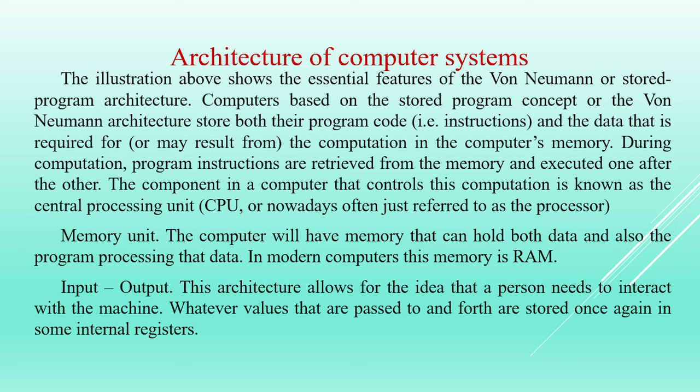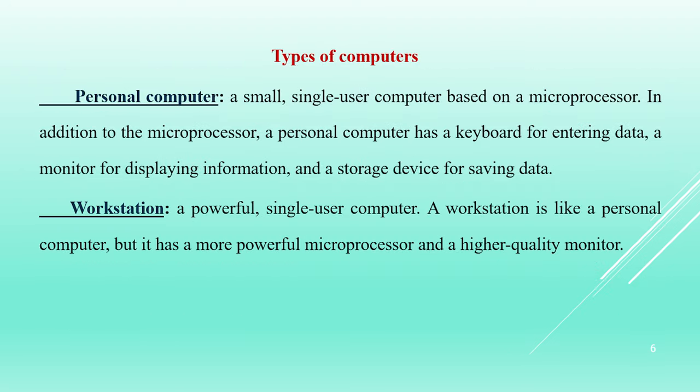Now let's look at the architecture of computer systems and its two devices. You can see it on the screen. There are two devices: input device and output device, the central processing unit — which is the main part — and then the control unit, the logic unit, and the memory unit.